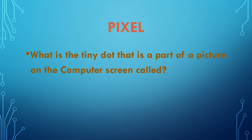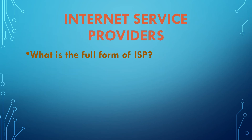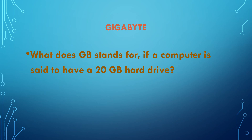What is the tiny dot that is a part of a picture on a computer screen called? That is called a pixel. Megapixel — these terms are there. What is the full form of ISP? ISP stands for Internet Service Provider. The full form of ISP is Internet Service Provider.